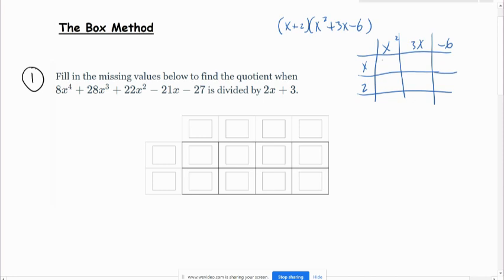And then when I multiply in the rows and columns, here I'd get x cubed, 3x squared, minus 6x, 2x squared, 6x, and negative 12. And so then our answer is going to be x cubed, and then the like terms always show up diagonally like this. So that is plus 5x squared. These add up to 0, and then minus 12.